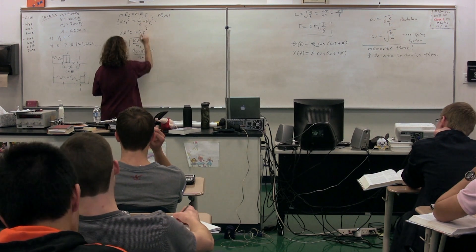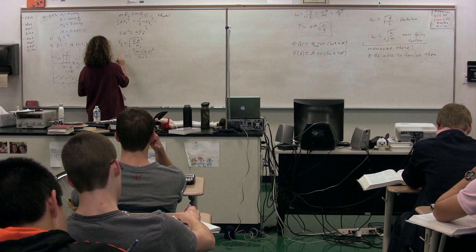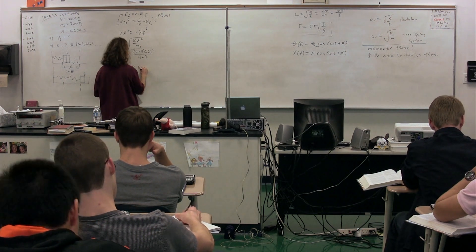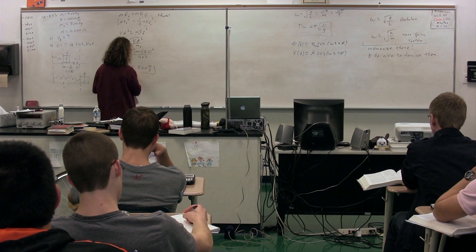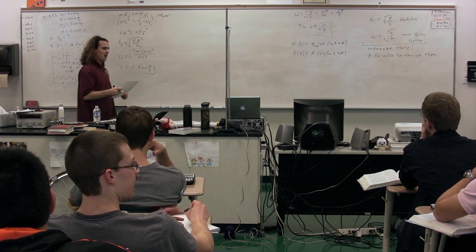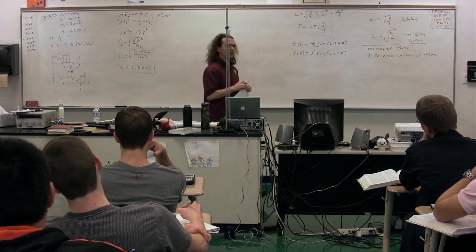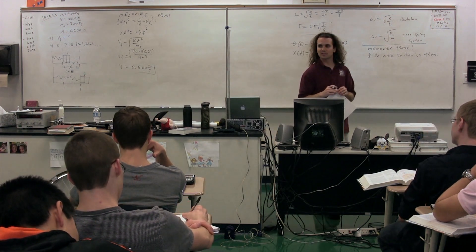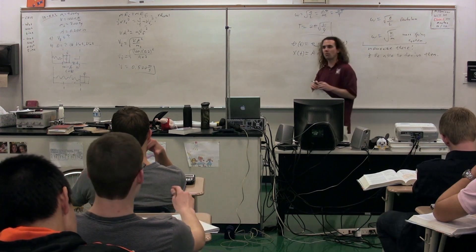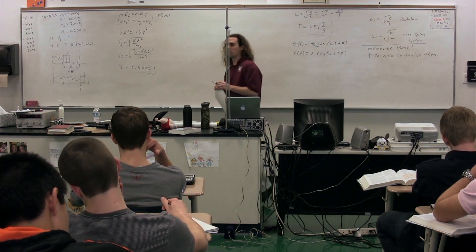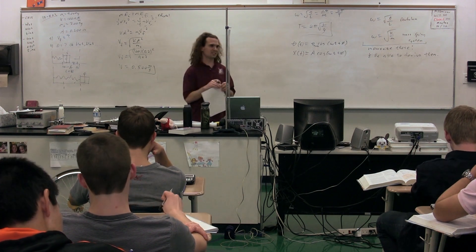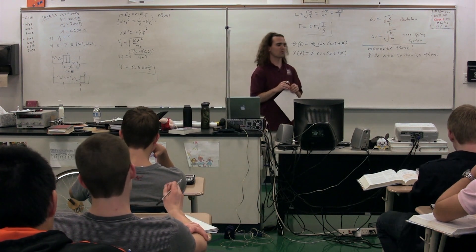So we have the spring constant 100 times the amplitude 0.2 squared, divided by the total mass of 9 plus 7 equals 16. Taking the square root gives the velocity of 0.5 m/s. So we have the velocity of block 2 as it moves to the right. Our goal now is to figure out the distance between block 1 and block 2 at the moment block 1 first gets to its maximum displacement from the equilibrium position — its amplitude.